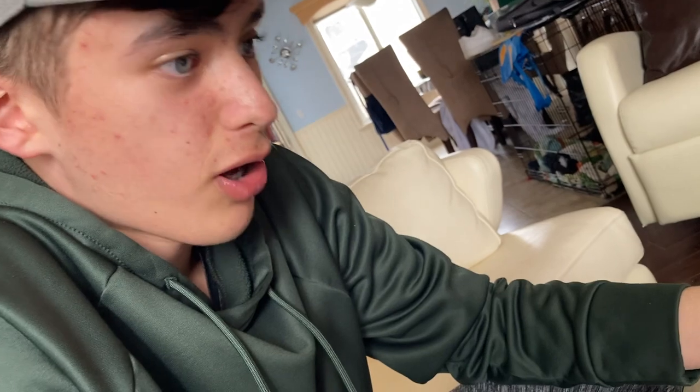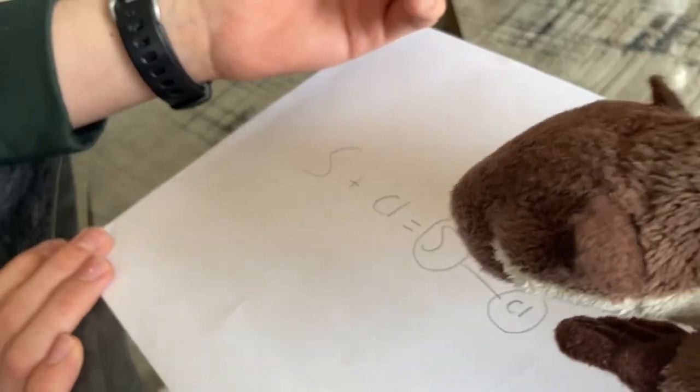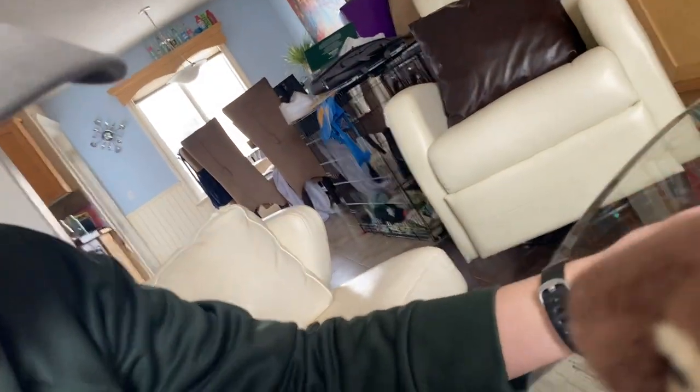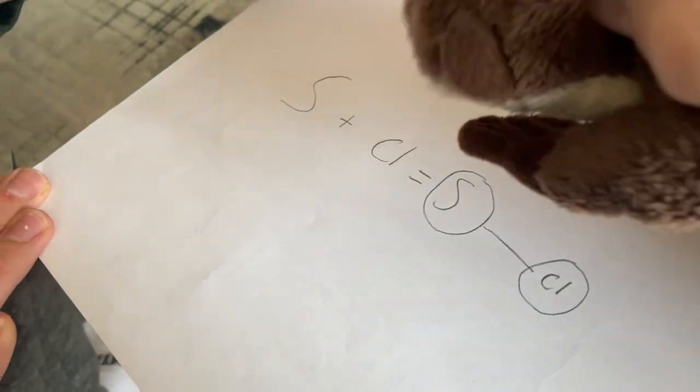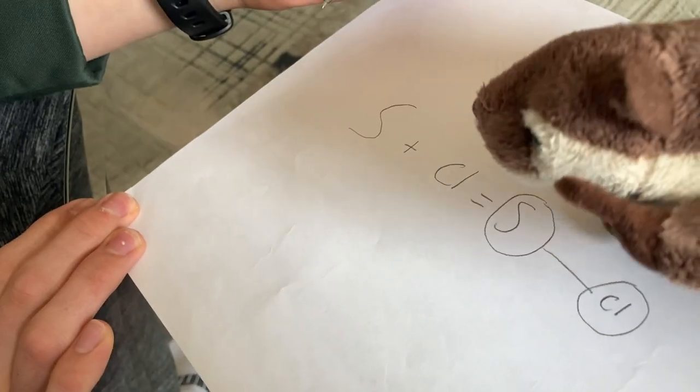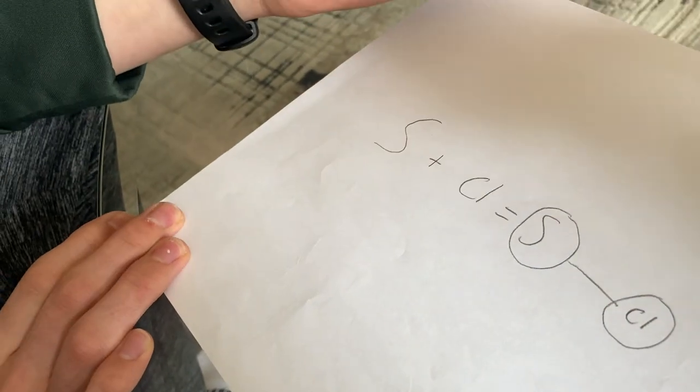But how do I figure out how much of each atom there is? Well, if we look at the bottom of each atom, we see a little number. This is called the subscript. It tells us how many of each atom there are. In this case, with sodium chloride, there aren't any, so it's not needed.